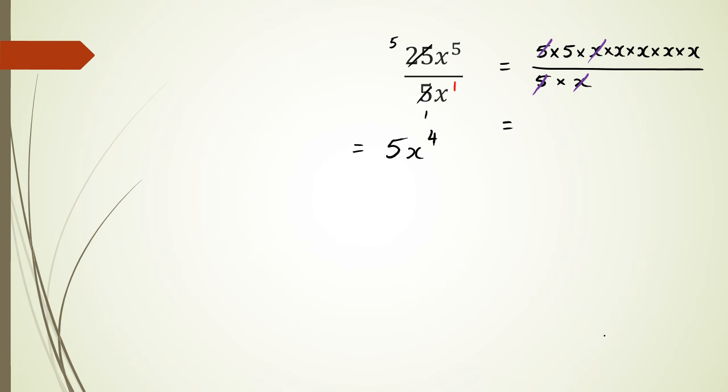And what you'll notice is as I start canceling things up, I've got two 5s get rid of each other, one x there and one x there, and what you should notice is I've got 5 in the numerator and I've got 1, 2, 3, 4, so x to the power of 4. And as you can see, these two answers are the same answers.